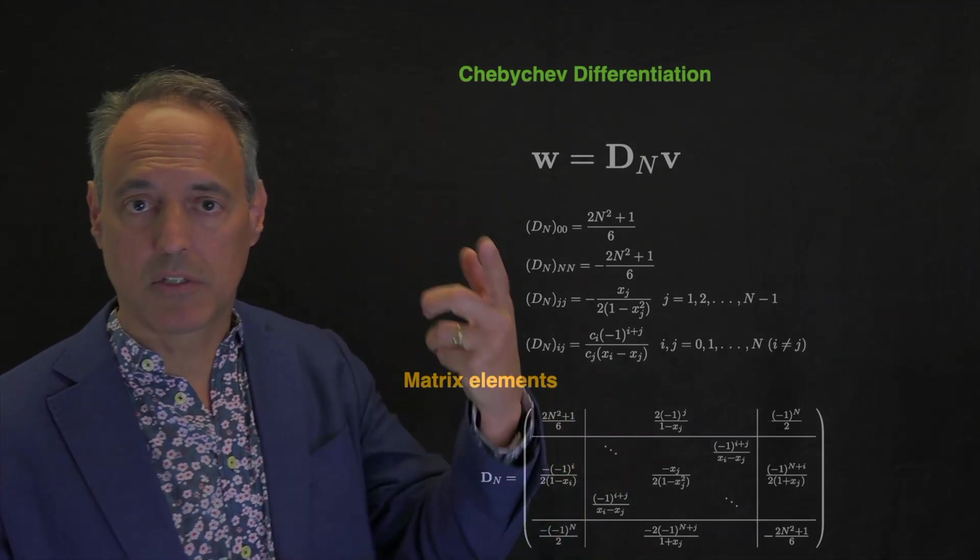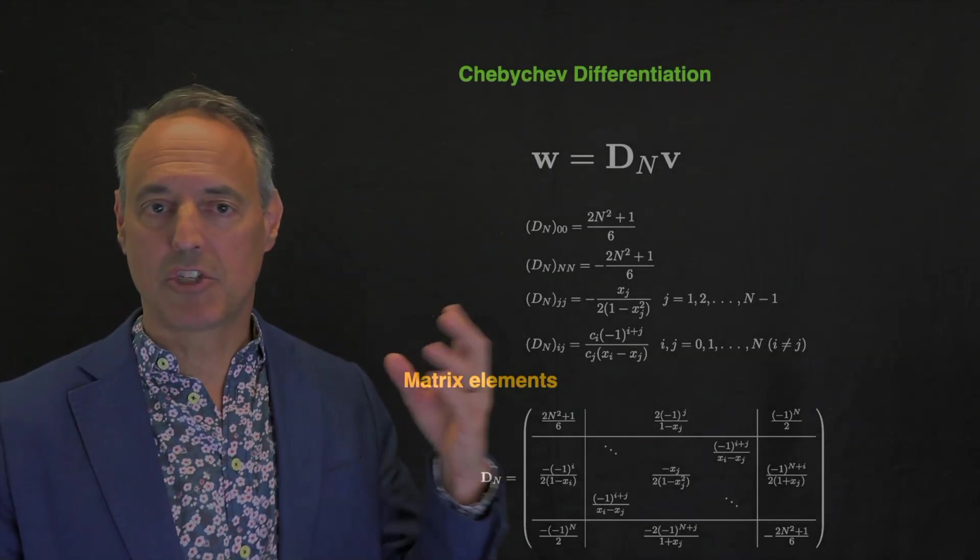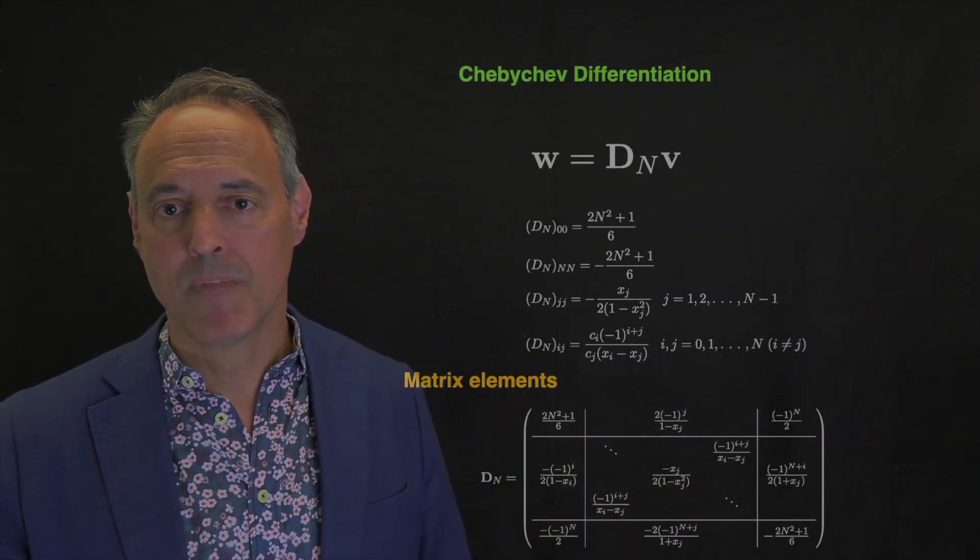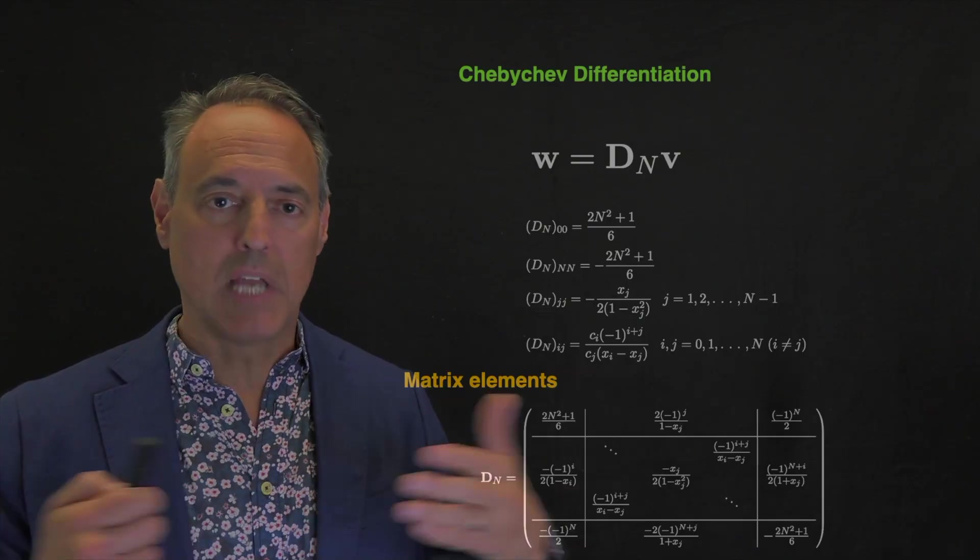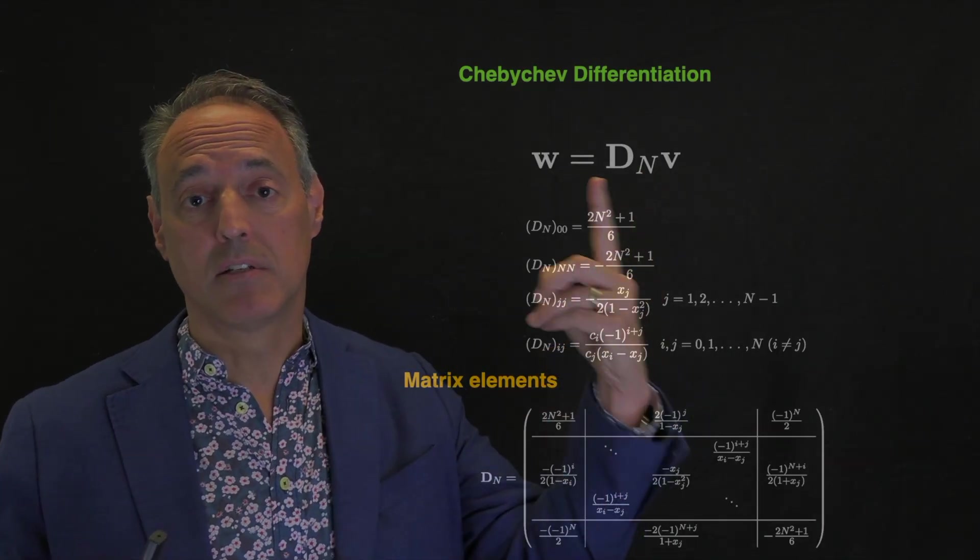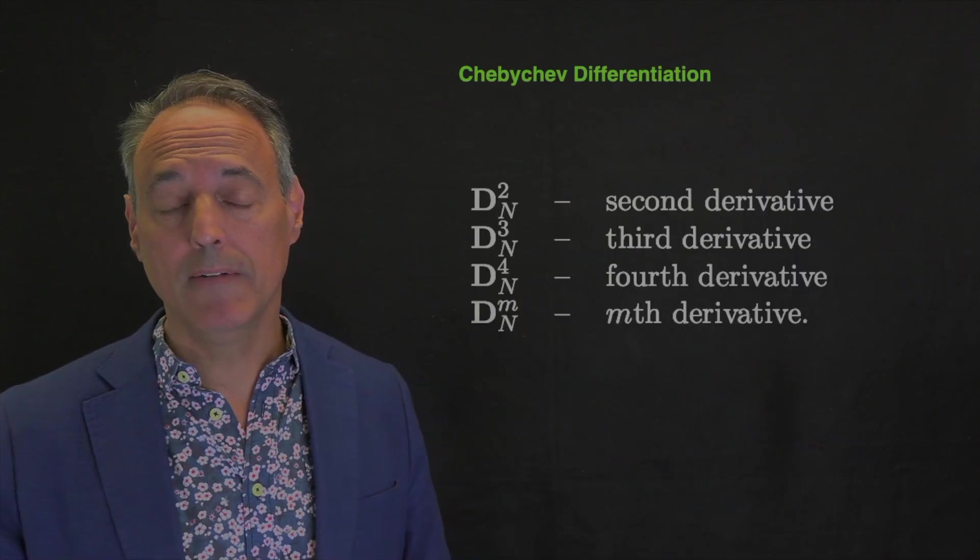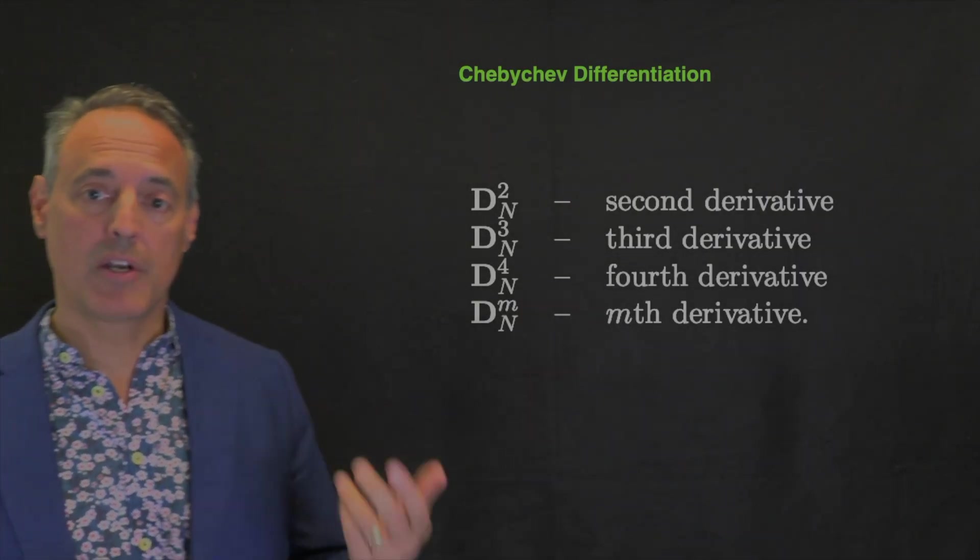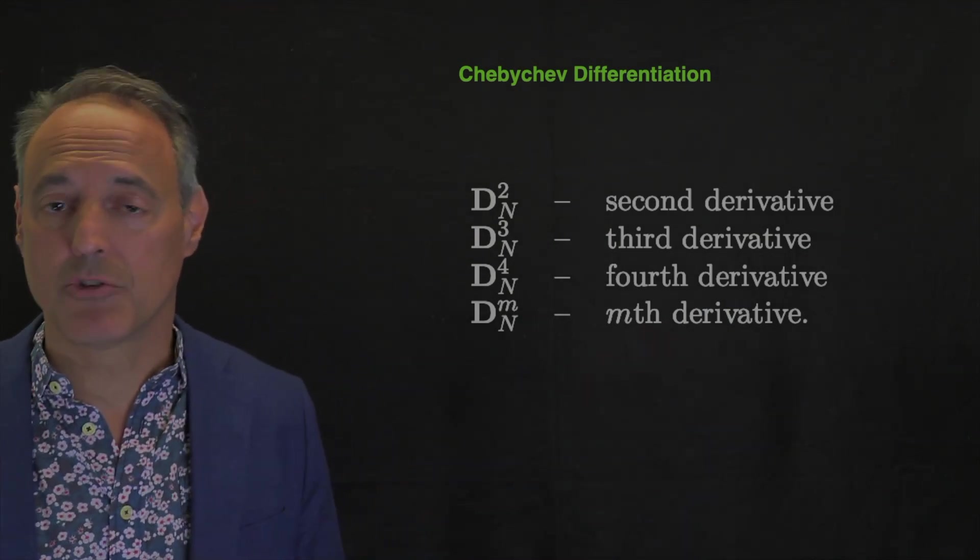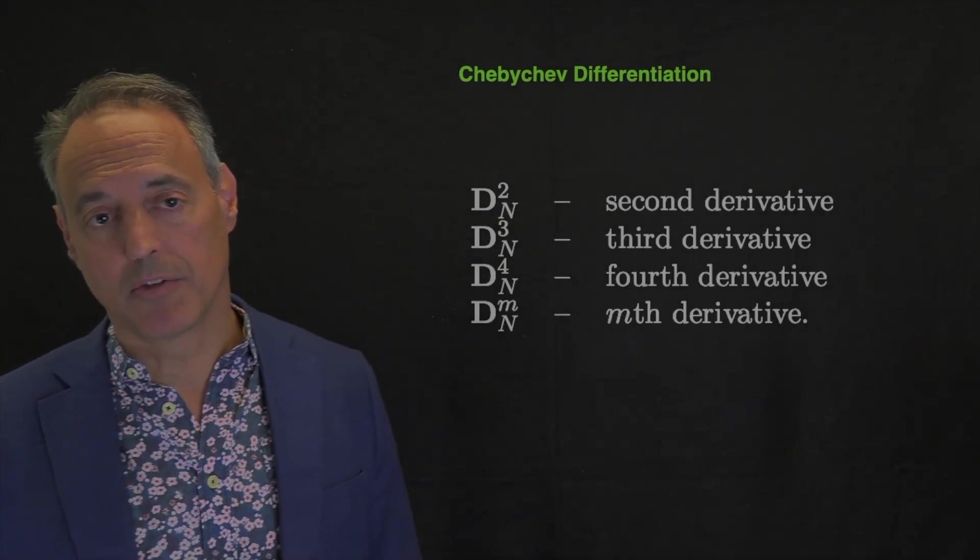This matrix is constructed in the GitHub I have for you. It's called Chebyshev, and that Chebyshev function creates this matrix that you actually can differentiate vectors with. First you put your data on an unevenly spaced grid, the Chebyshev grid, and then this matrix takes derivative of the data on that grid itself. In fact, once you have D, D squared is the second derivative, D cubed is the third derivative, fourth derivative, nth derivative. Just matrix multiplications or matrix powers give you the higher-order derivatives you need to solve a lot of these problems.